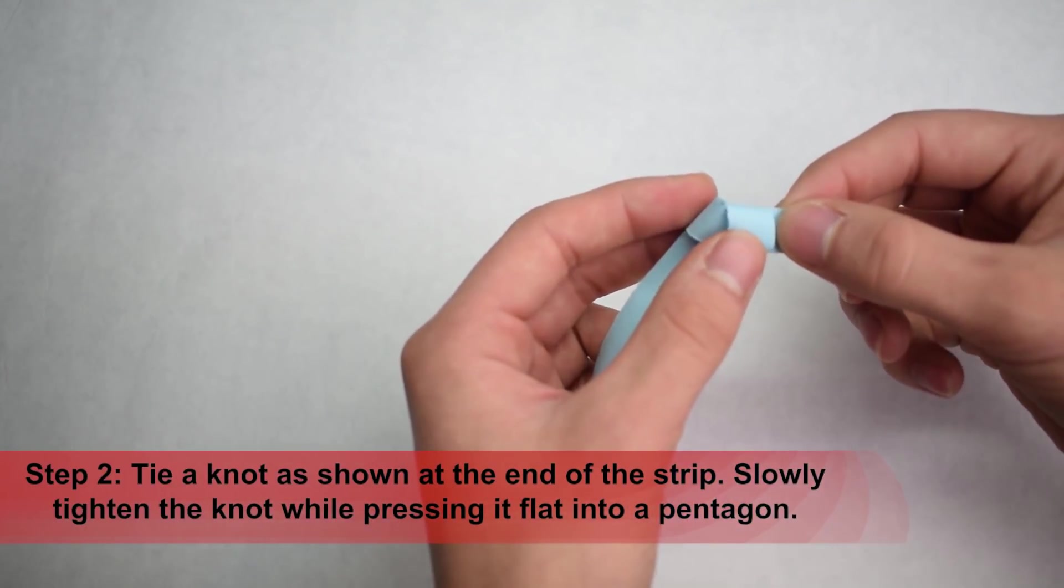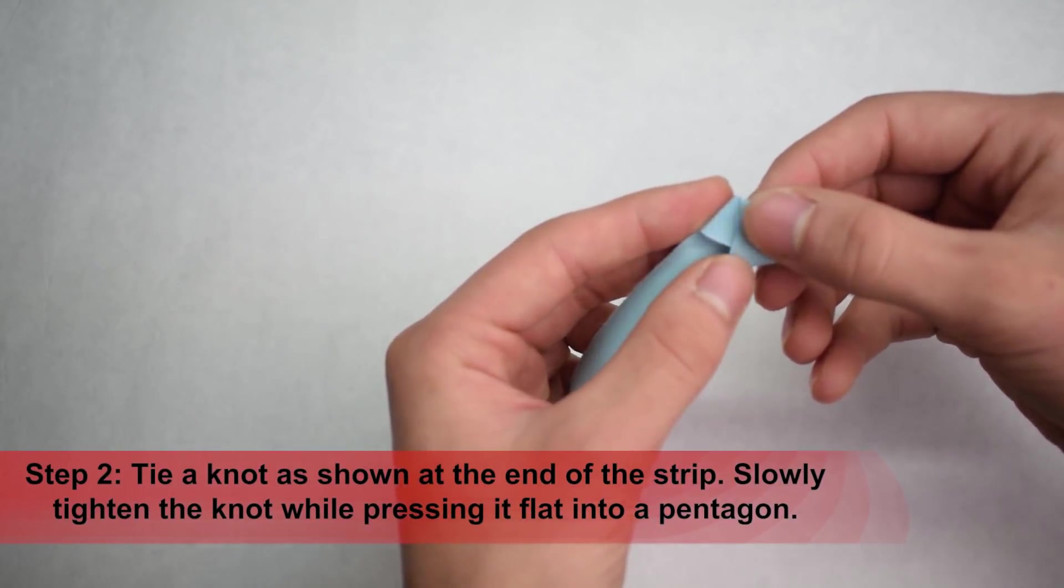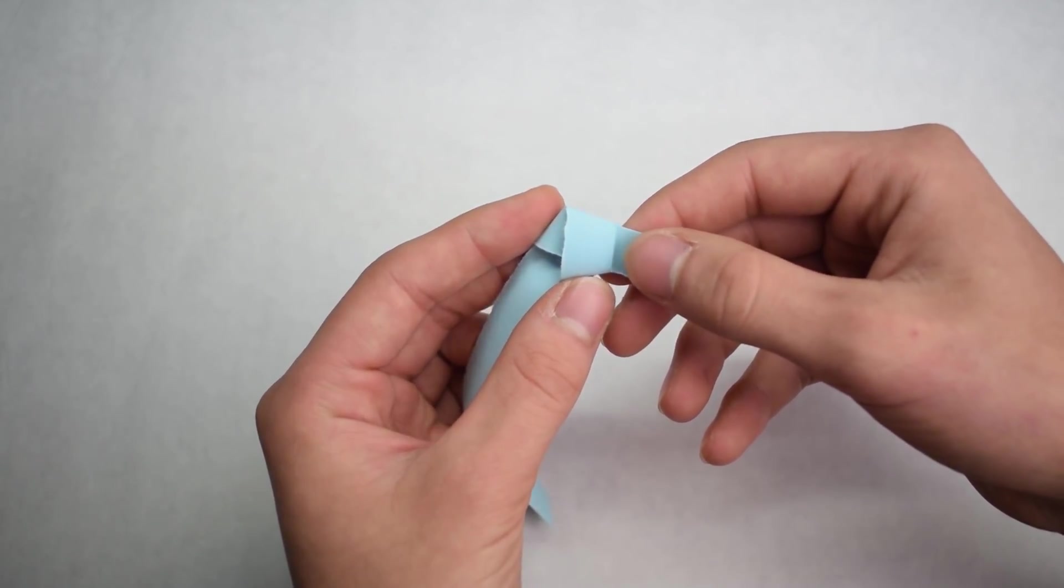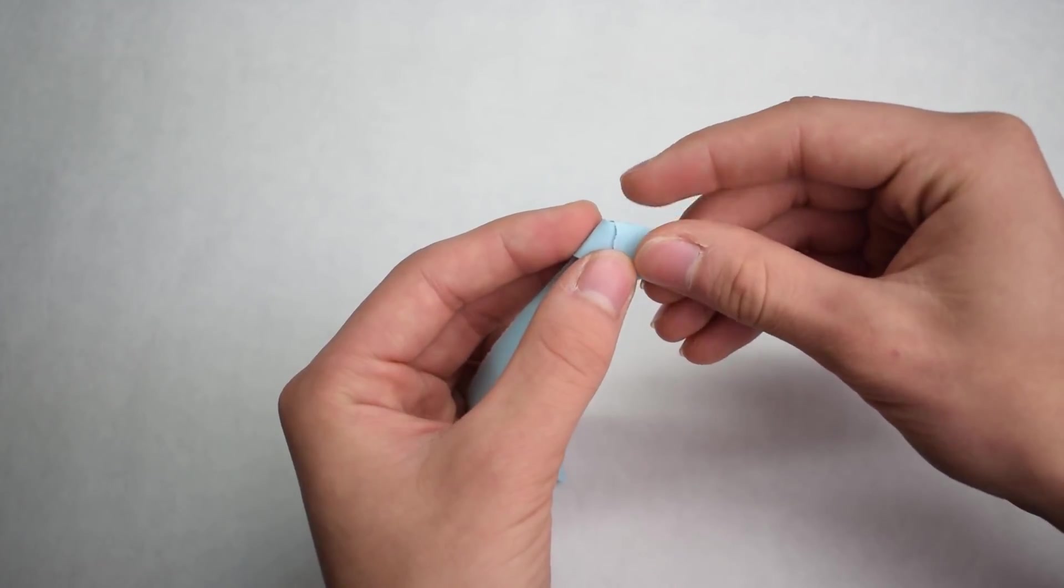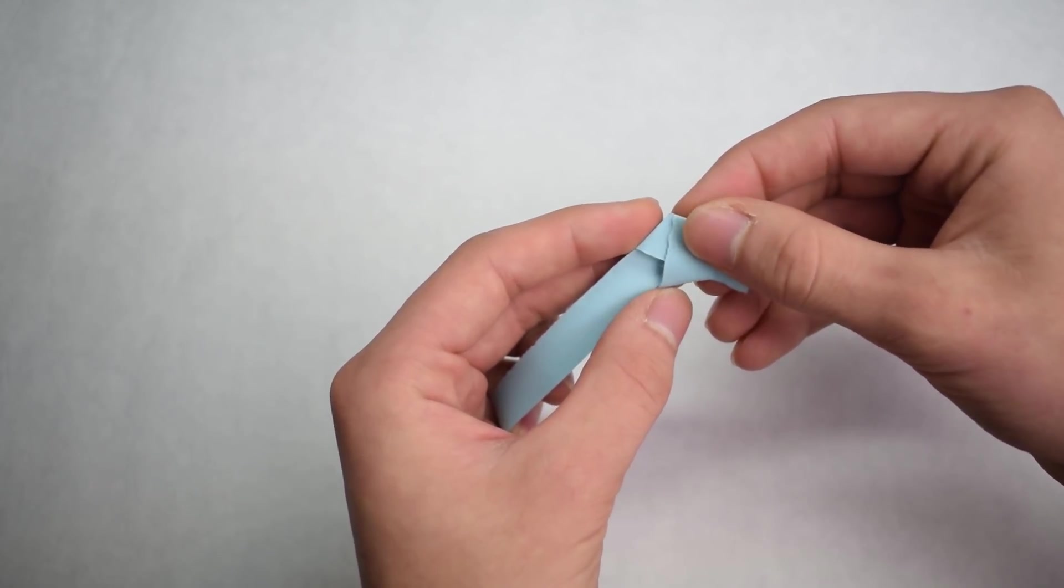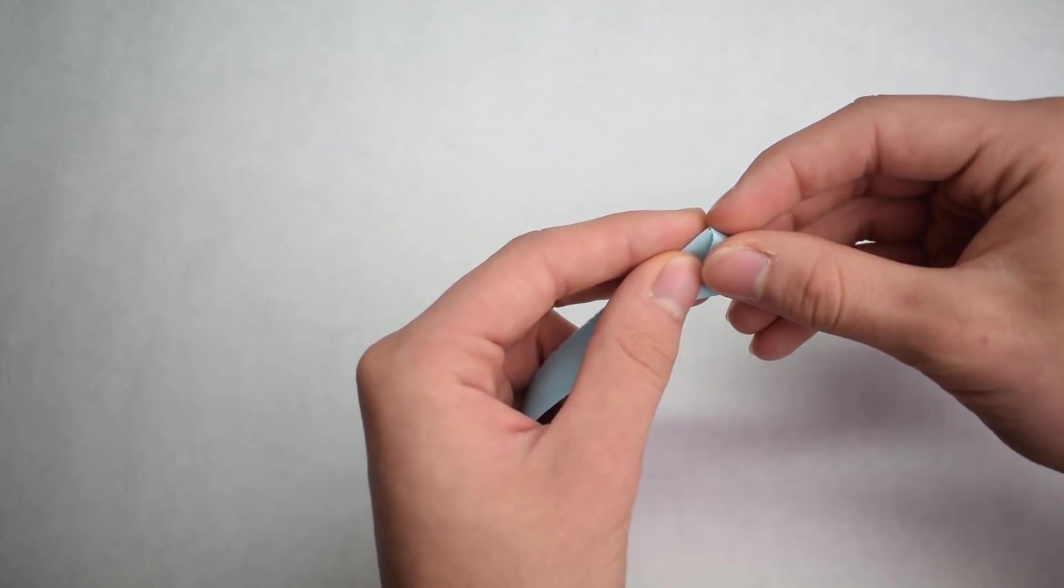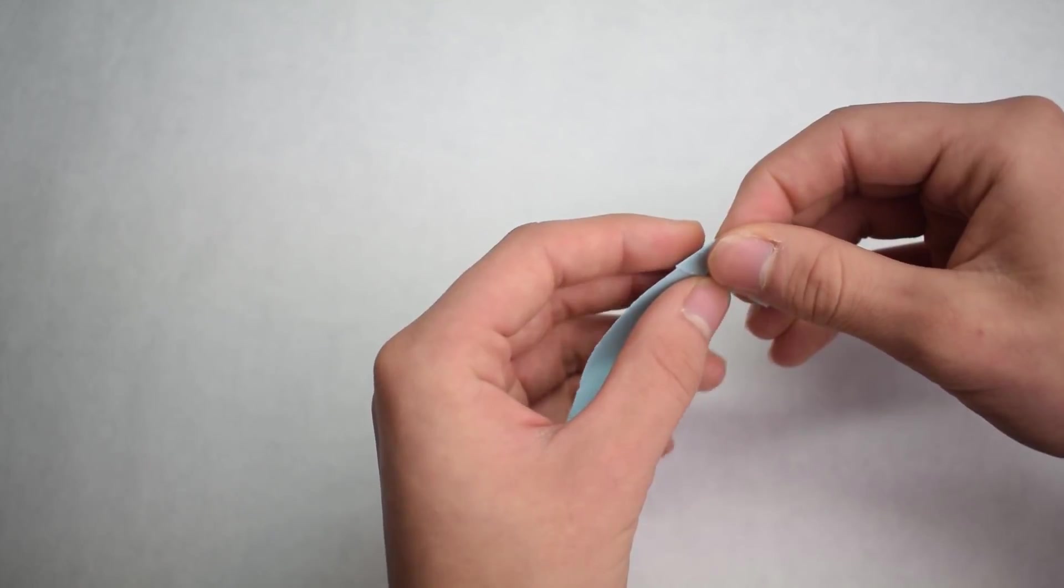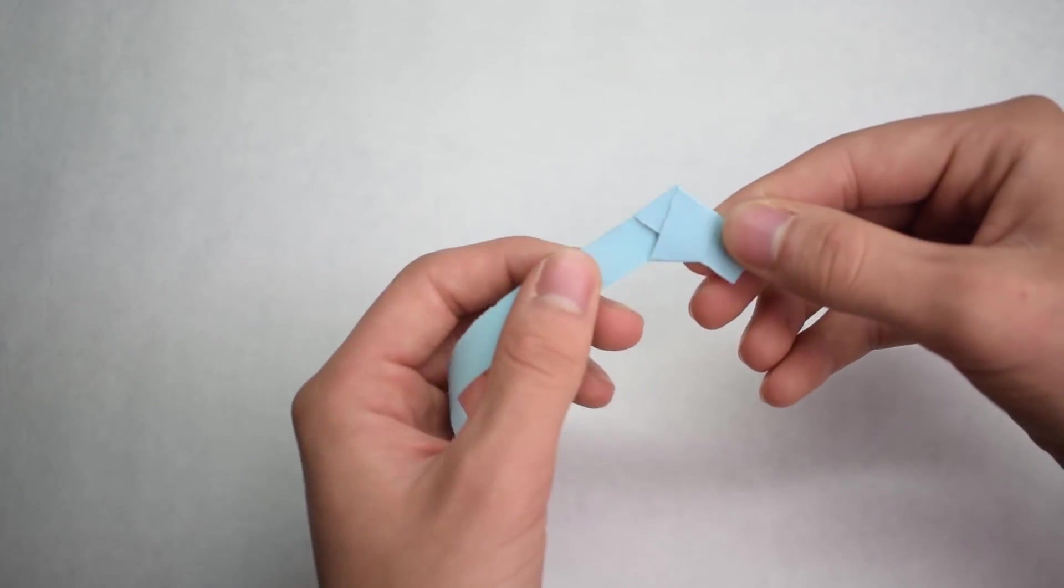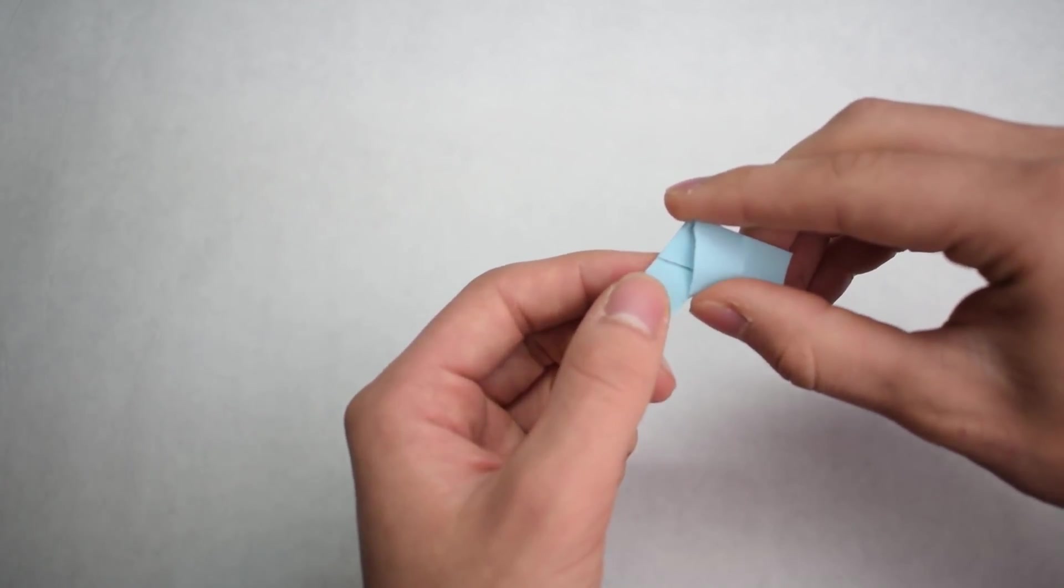You can kind of see it's starting to form here. Basically, as I'm tightening it, I'm pressing down, pressing it flat so that I can make sure that this pentagon is taking shape. I'm going to just keep pulling until it becomes this shape. All right, so now it's tied.